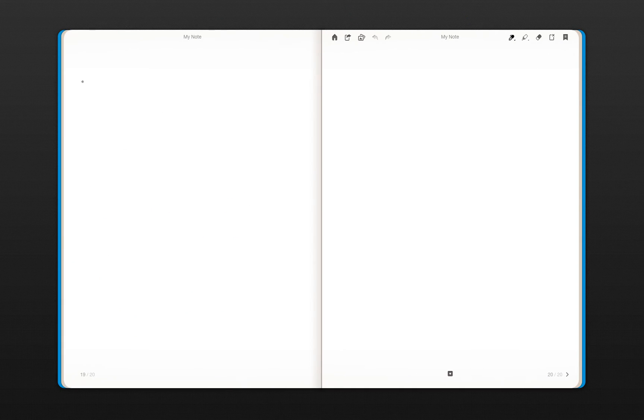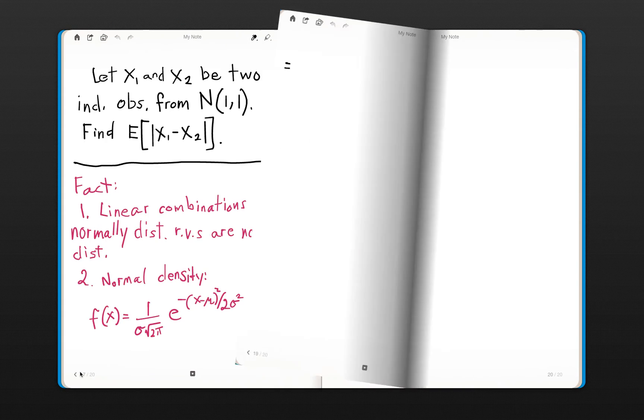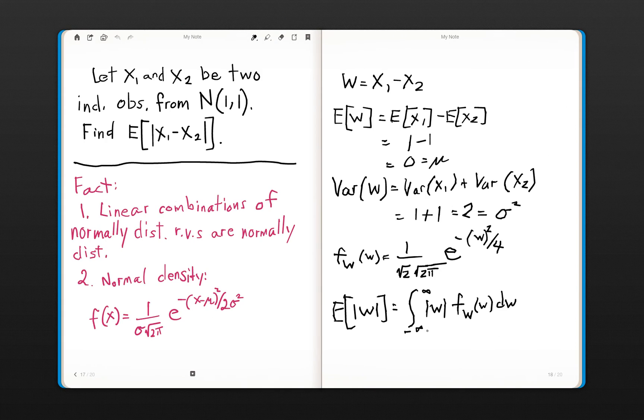So that quantity that we just wrote down can be written as follows. We're going to split up the integral, since it was the absolute value of W here, going from minus infinity to infinity. We're going to split up this integral, so whenever W is actually negative in this density, we just need to multiply it by a negative to make it positive again. That'll give us the absolute value. And then when W is actually positive, then we really don't need this absolute value, and we just leave it positive.